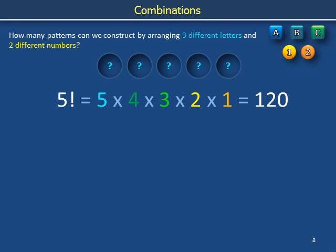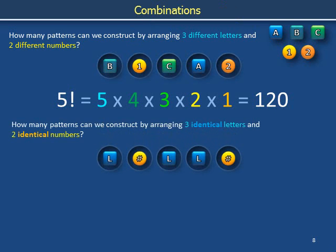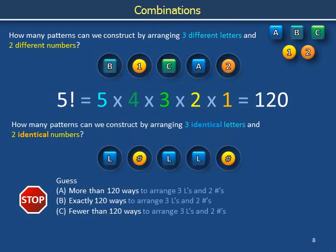There are five places to put the letter A, four places to put the letter B, three places to put the letter C, two places to put the number one, and one place to put the number two. How many patterns can we construct by arranging three identical letters and two identical numbers? Do you think that it's more than 120 ways, exactly 120 ways, or fewer than 120 ways? Please pause the video to think.